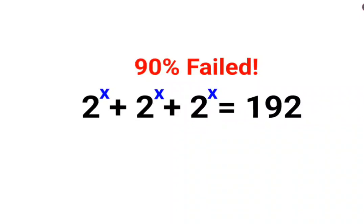Welcome everyone. Today we are going to understand how to solve this kind of indices problem, which says 2 raised to x plus 2 raised to x plus 2 raised to x equals 192.